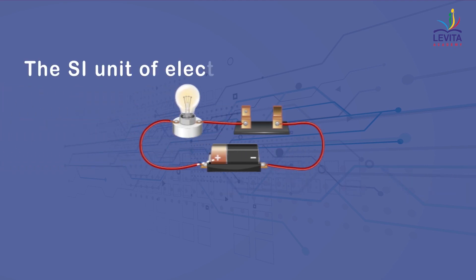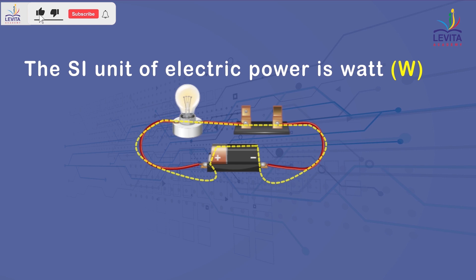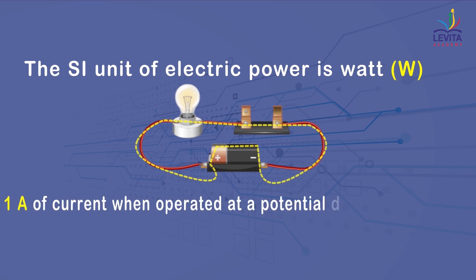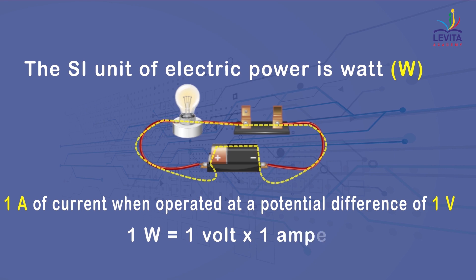Now, the SI unit of electric power is watt and is defined as the power consumed by a device that carries 1A of current when operated at a potential difference of 1V. Thus, 1W = 1V × 1A.